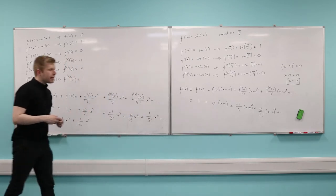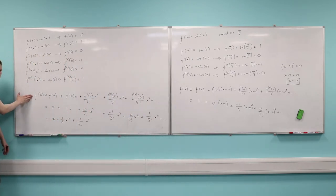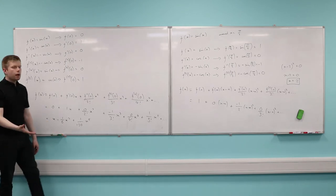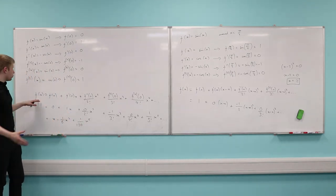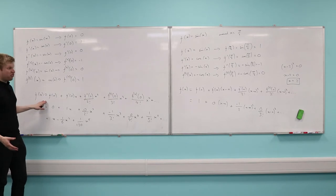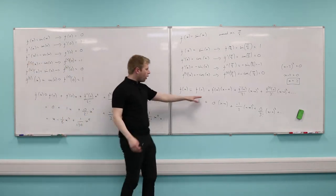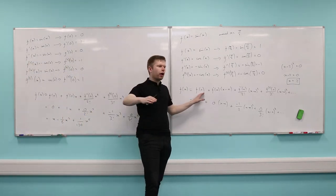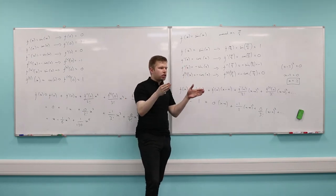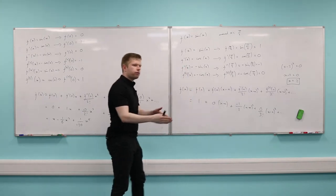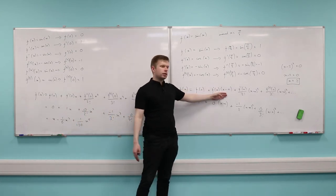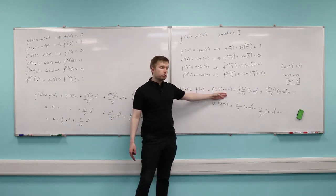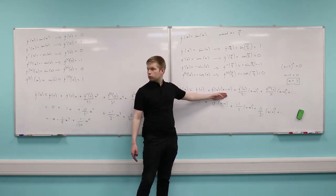Does that make sense? All I'm doing here is taking what we looked at before — I looked at zero initially because it was easier. But now we're looking at an adaptation: not just around zero, but what happens if I choose any value I like? I center my approximation around a different value, and it's just a small adaptation — I just have to consider x minus a as my factor.